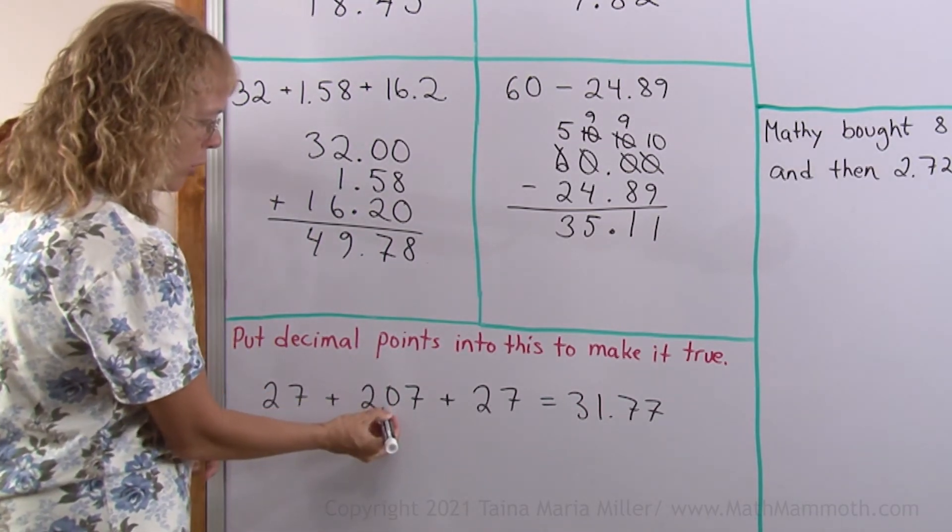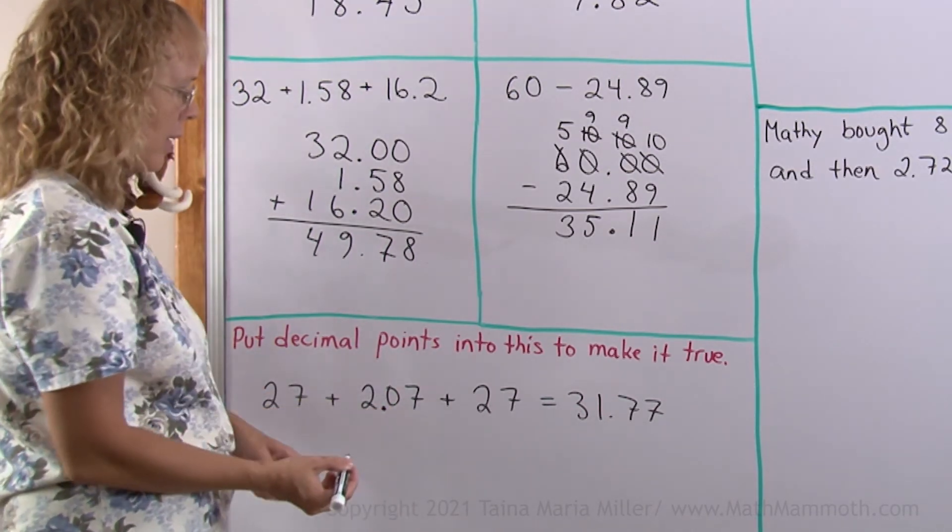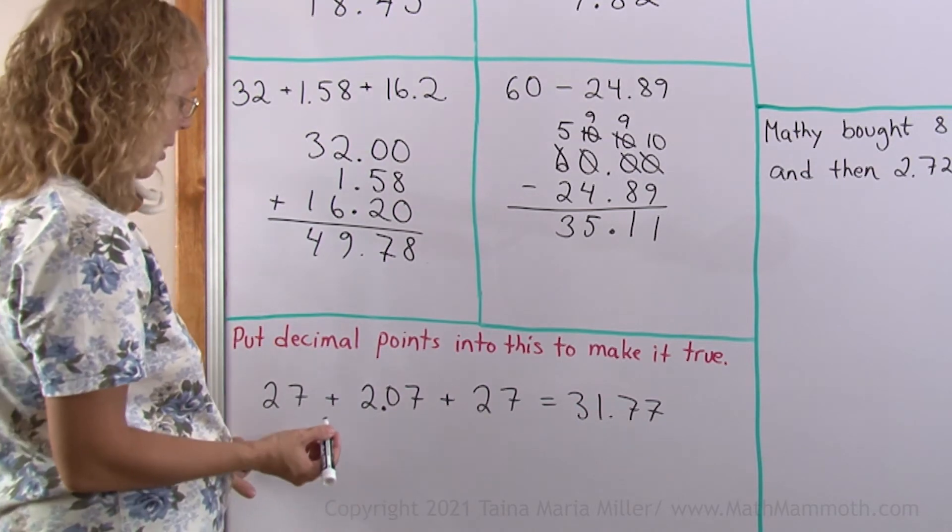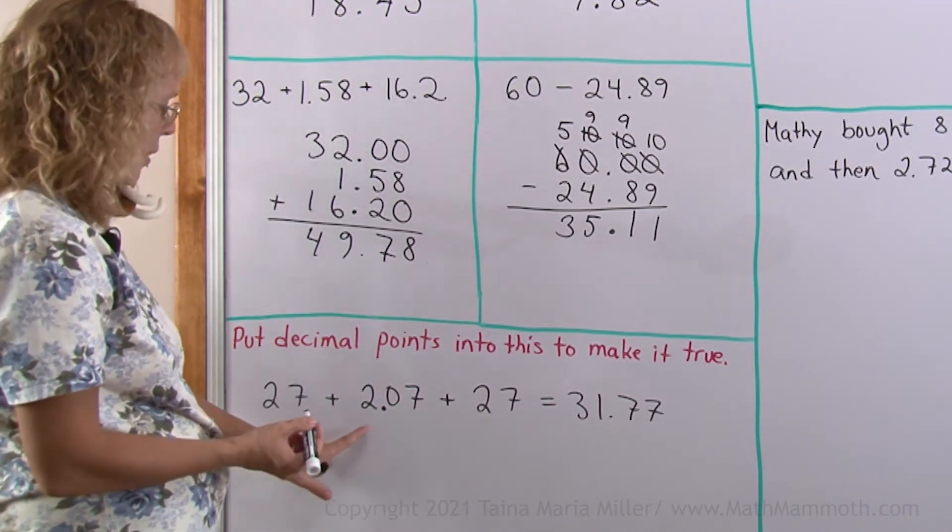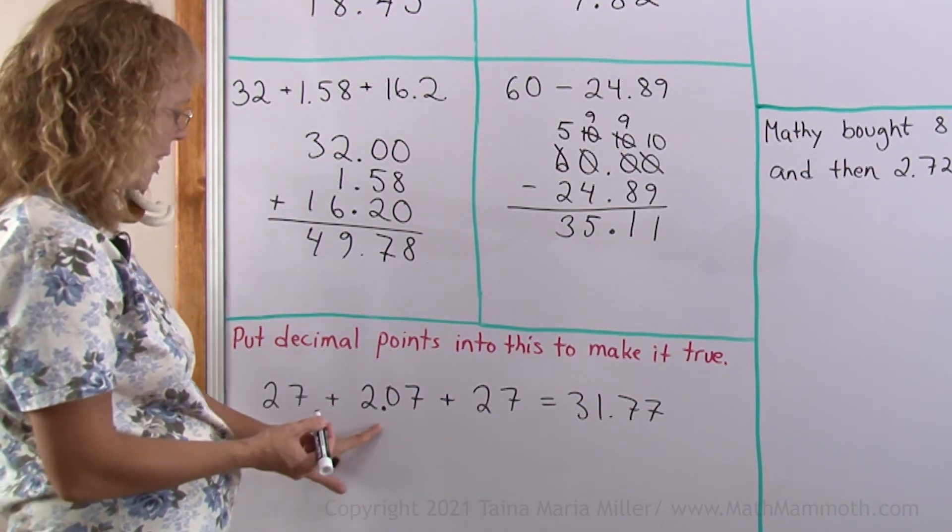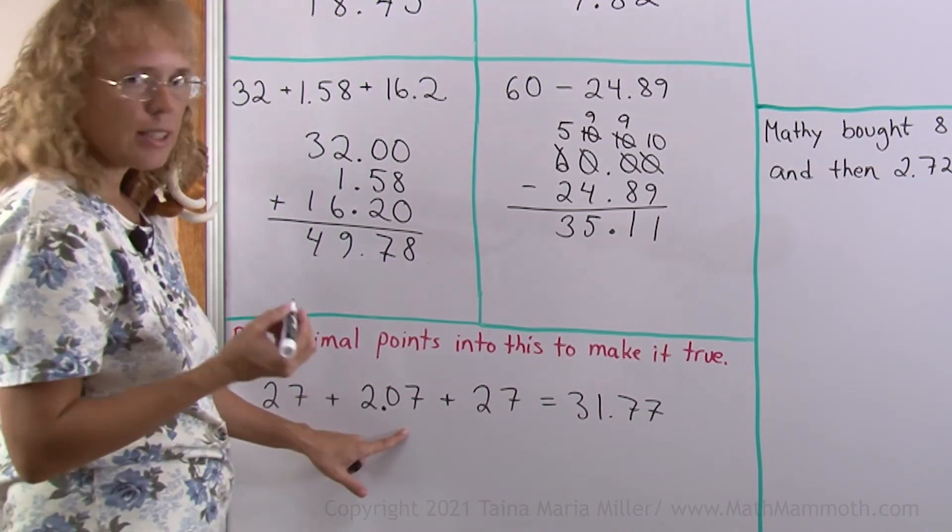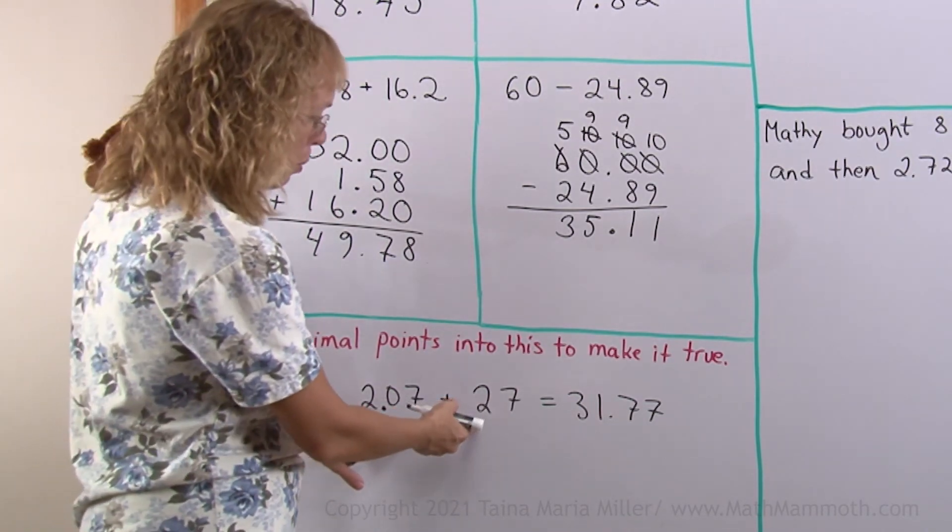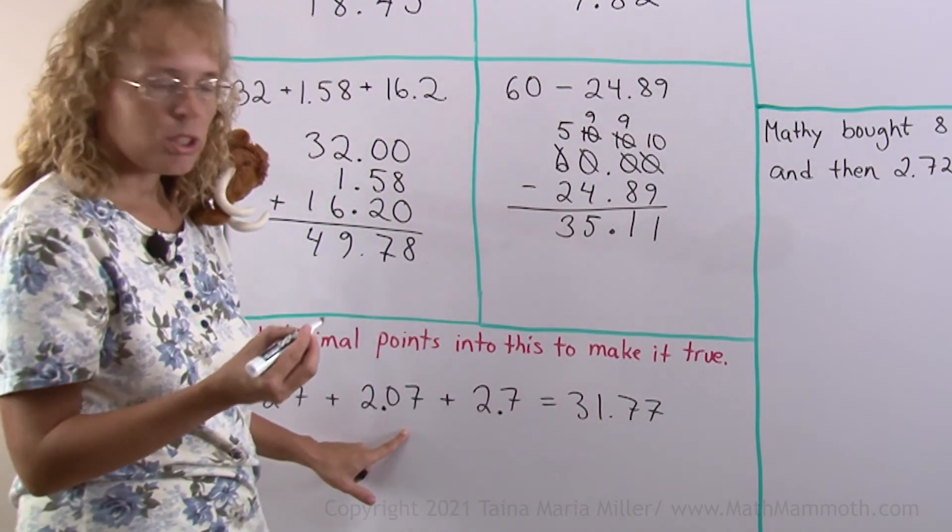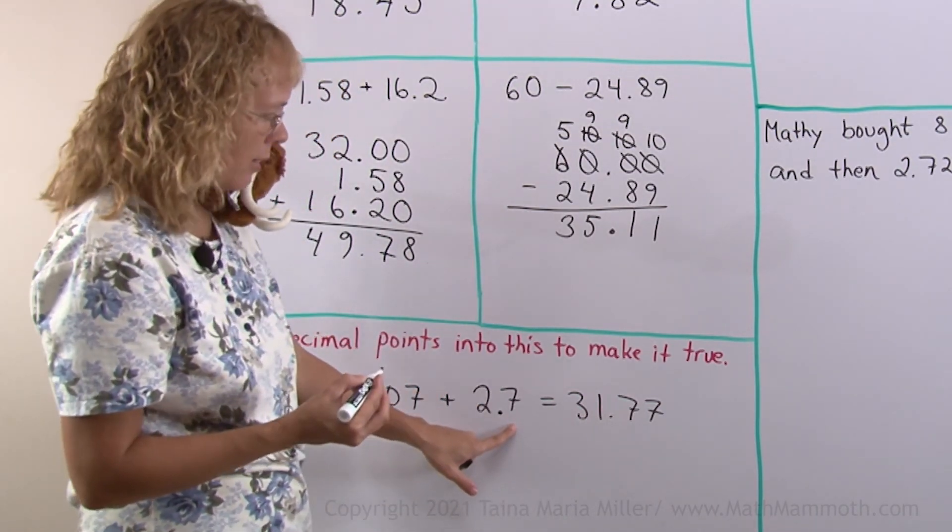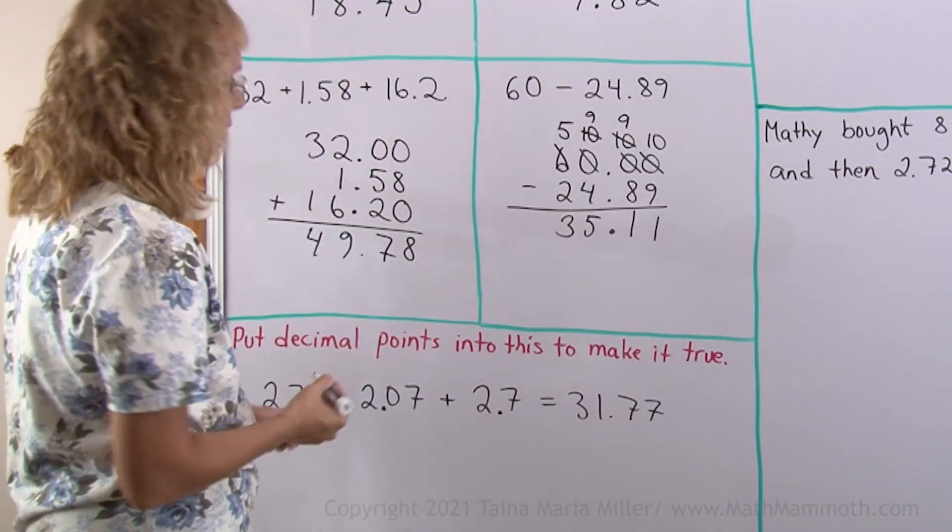Let me try it. If I put this to be two point zero seven. Let's say this is twenty-seven. And we add two to it. We get twenty-nine. Twenty-nine and seven hundredths. And then two more. That sounds pretty good. Twenty-nine plus two is thirty-one and seven tenths. Yep. That matches. It's solved.